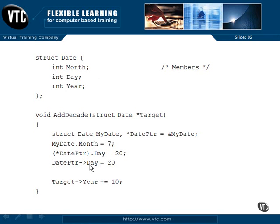Down here we finish addDecade: target->year plus equals 10, which adds our decade to target and passes it back — it's already taken effect. We don't have to return anything; since this is void, we won't get any errors because we changed the original. We didn't have to deal with pass-by-value; we passed by reference using a pointer to a structure. Pointers to structures are manipulated just like any other pointer — we can add or subtract integers to move through memory across an array, just as we covered before with arrays and pointers.